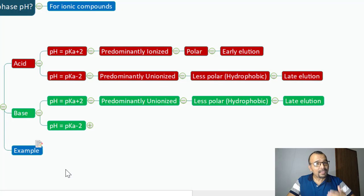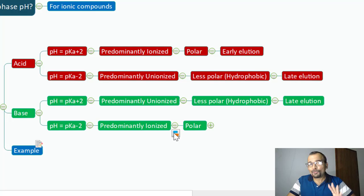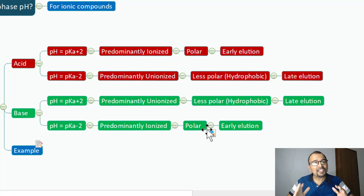In case the pH equals pKa minus 2 for a weak basic compound — that is pH 4, which is on the acidic side — basic compounds will dissociate in acidic pH. They will become more polar, predominantly ionized compounds. An ionized compound is a polar compound, and if the compound is in polar form, it will not interact with the non-polar stationary phase and will therefore elute early in the chromatographic run.